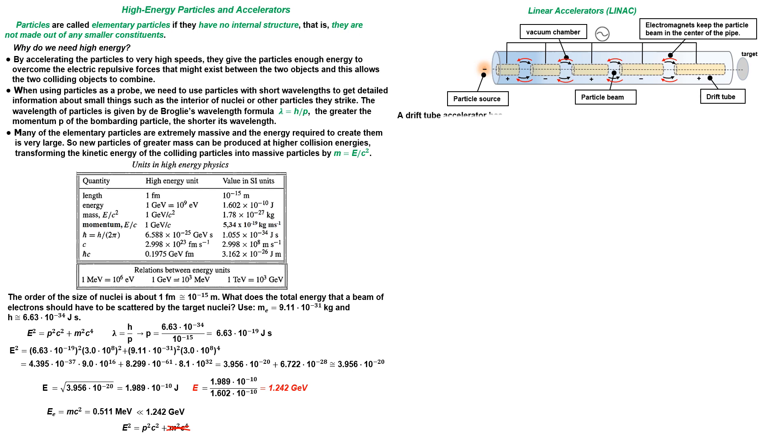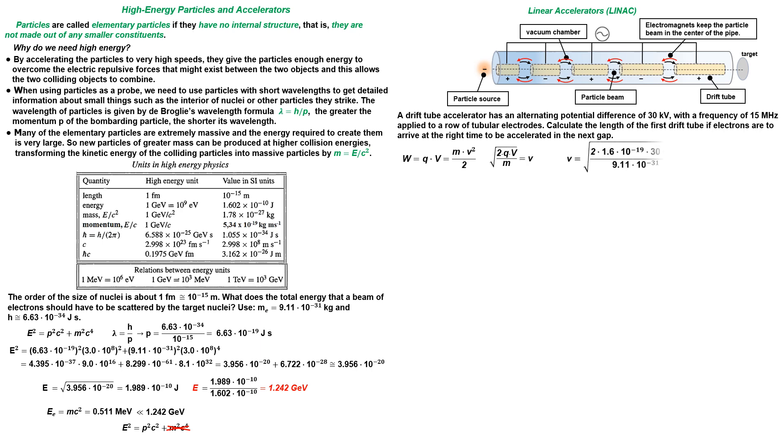Let's see how we could calculate the length of the first drift tube in a linear accelerator. Knowing that work equals charge times potential difference, then making velocity the subject of the equation, we get the velocity.